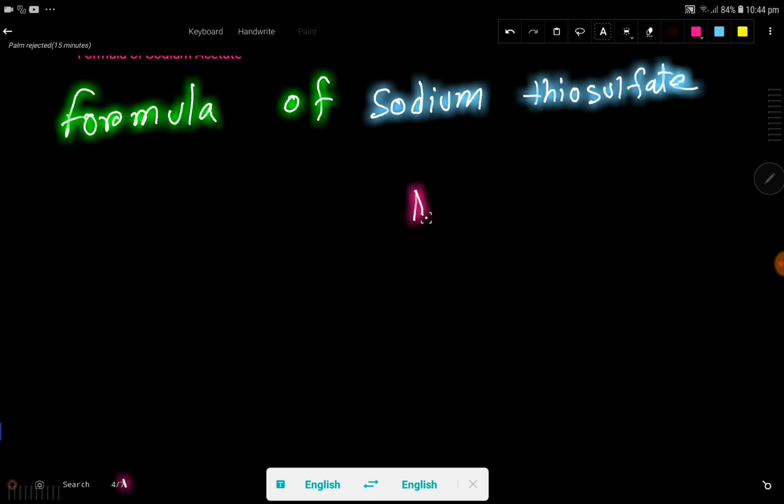You know that this is the symbol of sodium. Sodium is an element of group 1A in the periodic table. That is why sodium will release one electron. This is a metal, so it will have a positive charge. And thiosulfate...